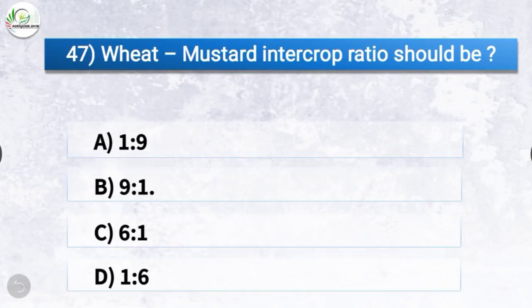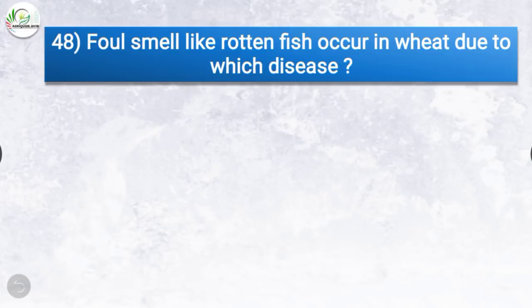Question number 47: Wheat-mustard intercrop ratio should be? The correct answer is option B, 9 is to 1. Wheat-mustard intercrop ratio should be 9:1.